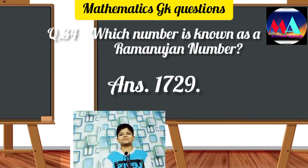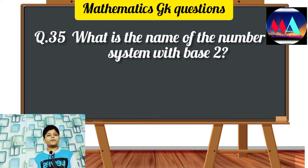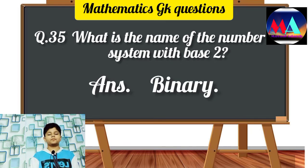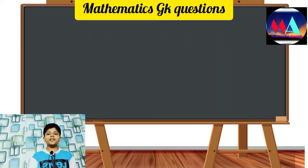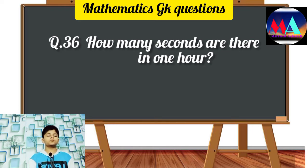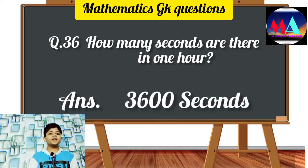Question number 35: What is the name of the number system with base 2? Answer: Binary. Question number 36: How many seconds are there in one hour? Answer: 3600 seconds.